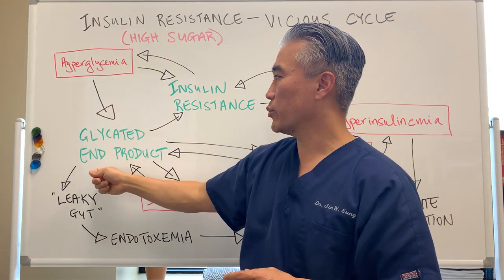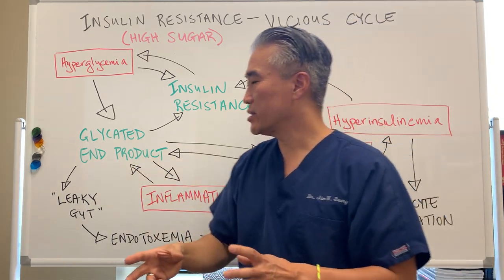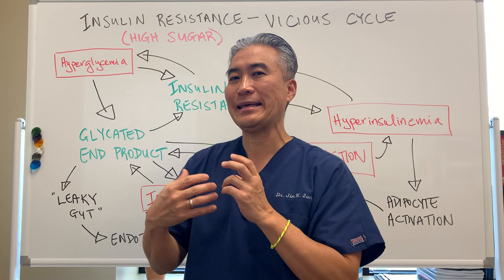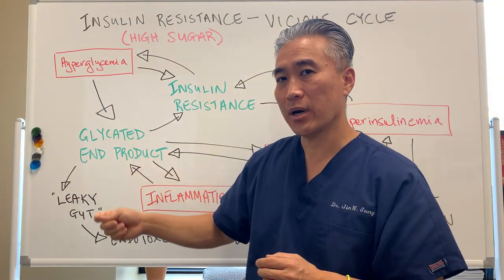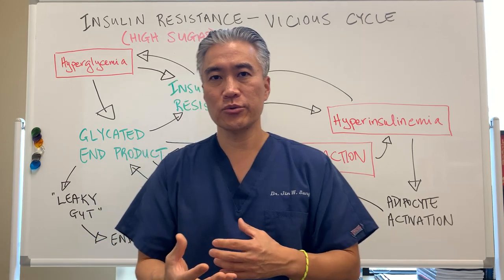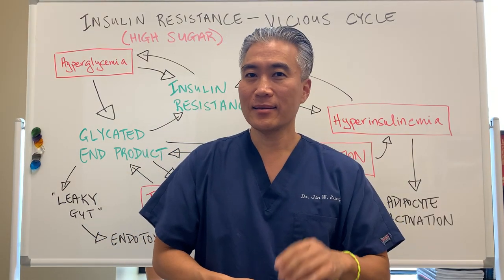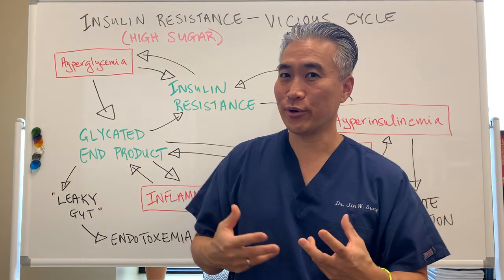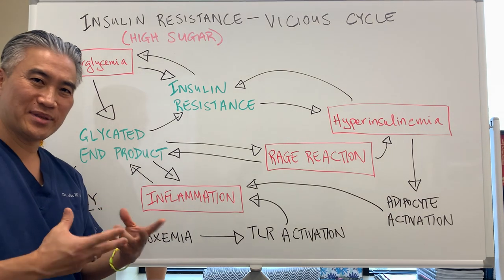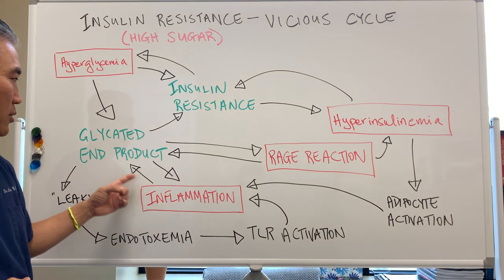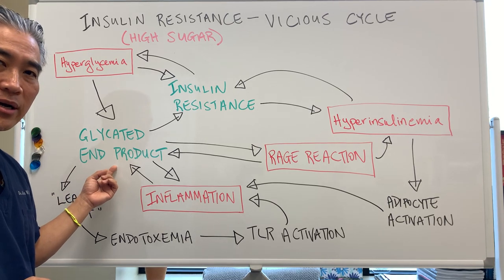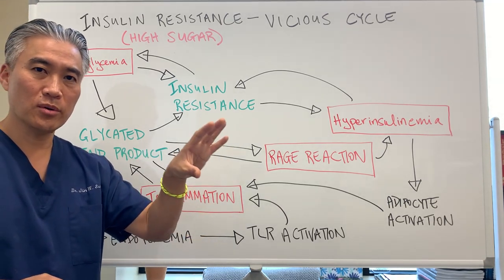Along with hyperglycemia comes what we call glycated end products. What that means is sugar will attach to either lipids or proteins and change their formation — basically aging them. If you think about it like cooking on the grill and getting a nice char on a steak, that is a glycated end product — you're doing damage to the protein. The glycated end products will create inflammation because the tissue has been damaged, and that inflammation will in itself cause more glycated end products. So there's a vicious cycle going back and forth between inflammation and glycation — the attachment of sugar to lipids and proteins.